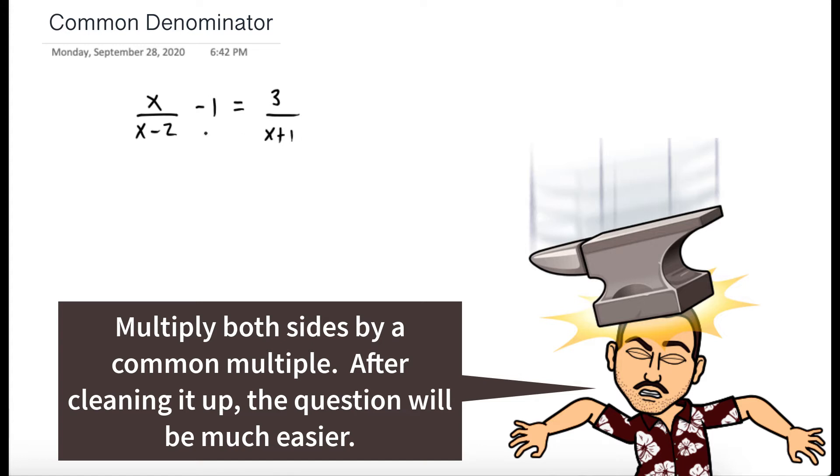So the first thing we should do is multiply both sides of the equation by a common denominator. And in this case, it's x minus 2 times x plus 1. We can just multiply by the denominators.